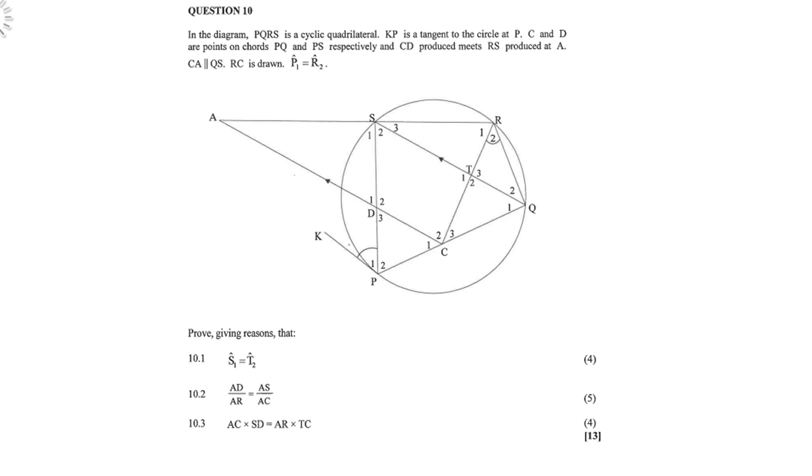In the diagram, PQRS is a cyclic quadrilateral. KP is a tangent to the circle at P. C and D are points on the chords PQ and PS respectively, and CD produced meets RS produced at A. CA is parallel to QS. RC is drawn.